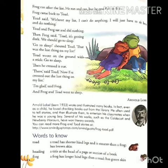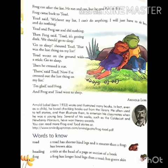Todd wrote on the ground with a stick: go to sleep. Todd ने उसी जगह जमीन पर एक छड़ी ली और उसकी सहायता से go to sleep लिखा. Then he crossed it out. तब उसने उसे काट दिया. There, said Todd, now I have crossed out the last thing on my list. वहाँ Todd ने कहा, अब मैंने अपनी सूची के आखिरी काम को भी पूरा कर लिया. I am glad, said Frog. मैं बहुत खुश हूँ, मेंढक ने कहा. And Frog and Todd went to sleep. और मेंढक और Todd दोनों सोने चले गए.